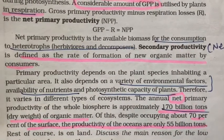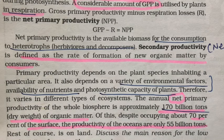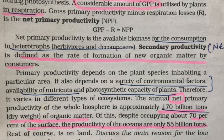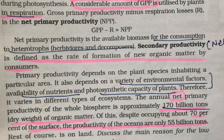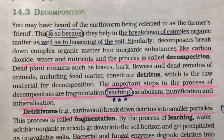Secondary productivity is the accumulation of biomass at the heterotroph level — that is, herbivores and decomposers. Again, it can be gross secondary productivity or net secondary productivity. Gross is the total productivity at that trophic level, and net is gross minus the respiratory losses.